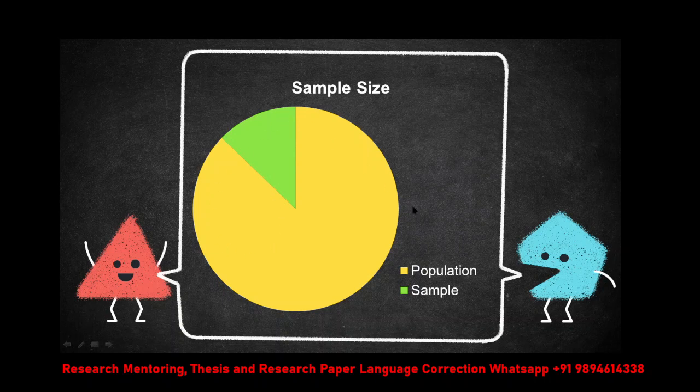Why are we not studying the entire thing? Why do we select only very few? Because the feasibility of studying the entire population is not possible by any researcher. That is why we select an appropriate sample. But have you selected the required sample size? That is the main important discussion. We will see how to select the appropriate sample size for your research study.